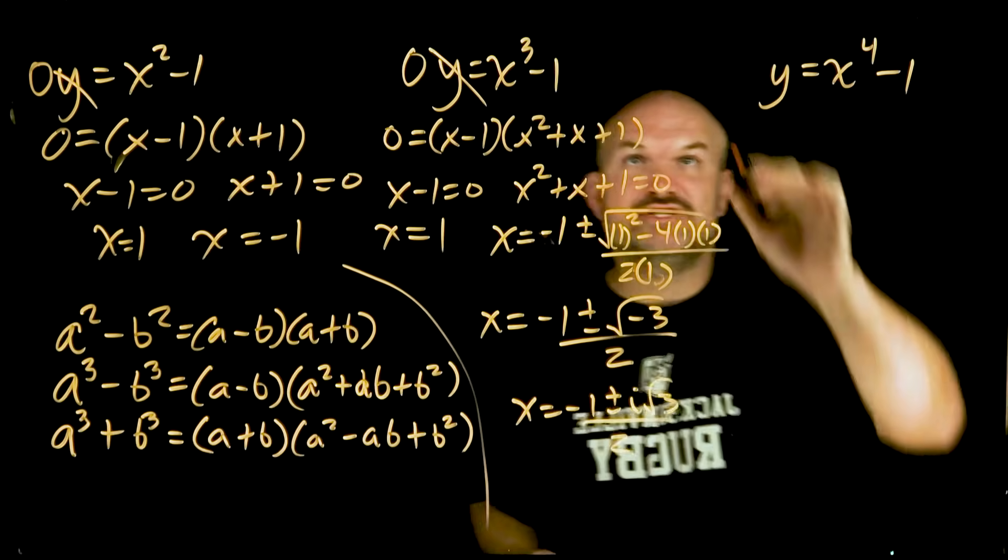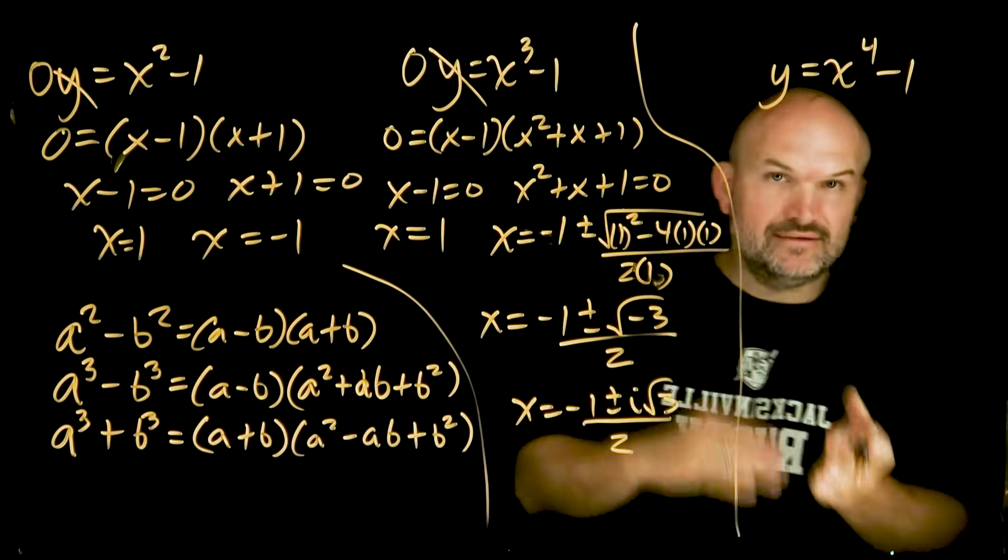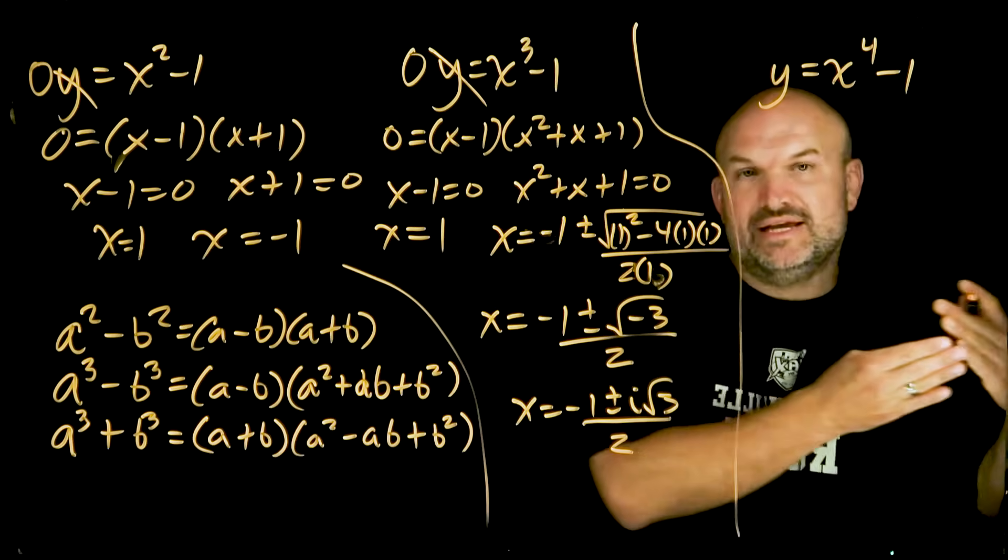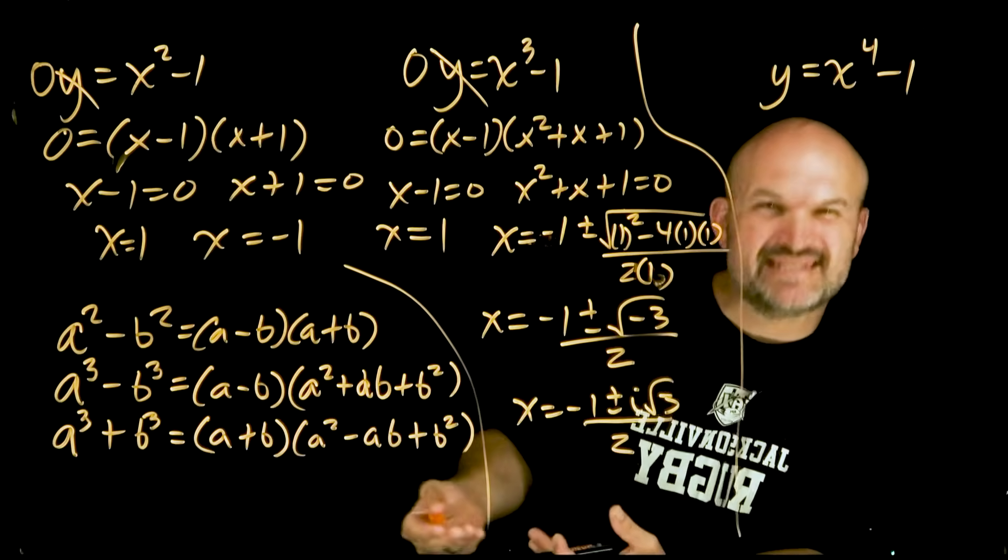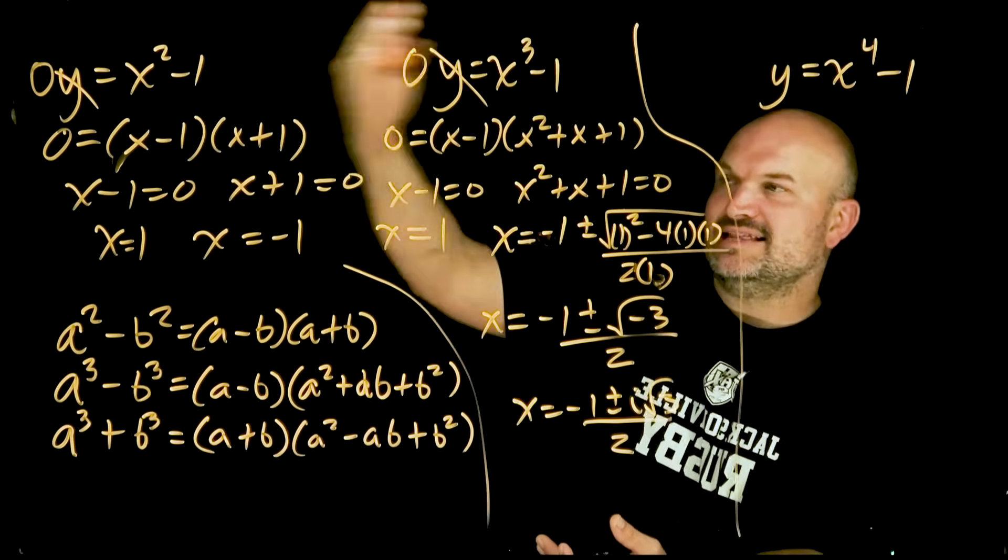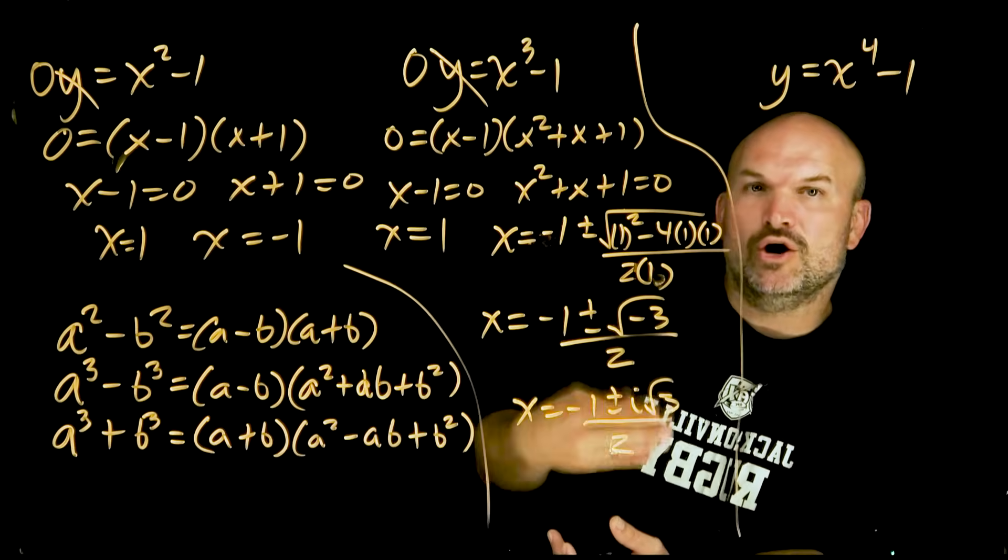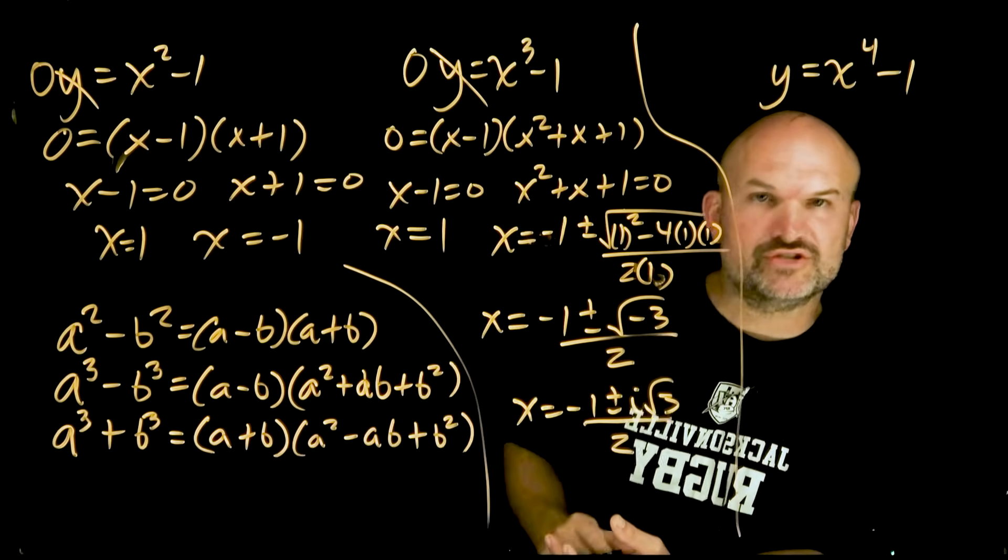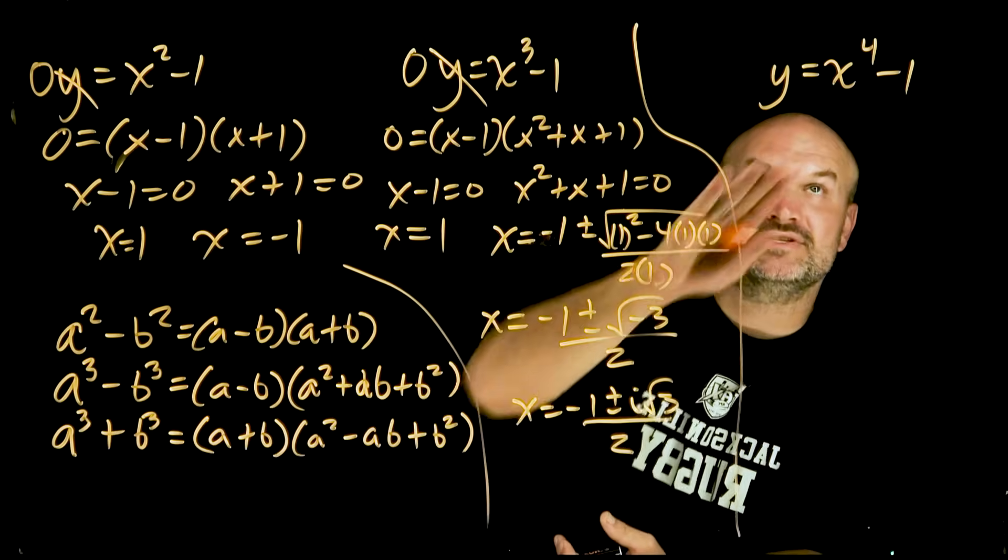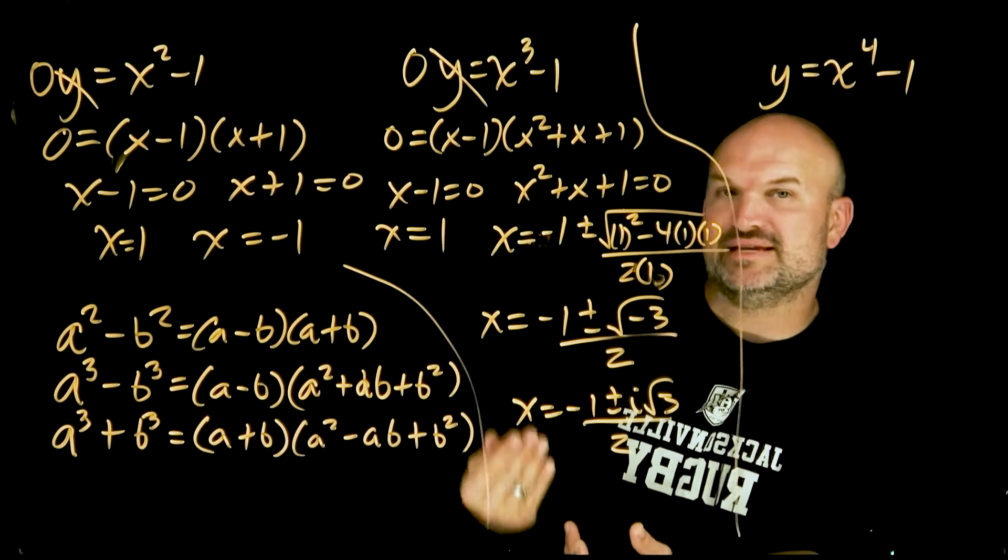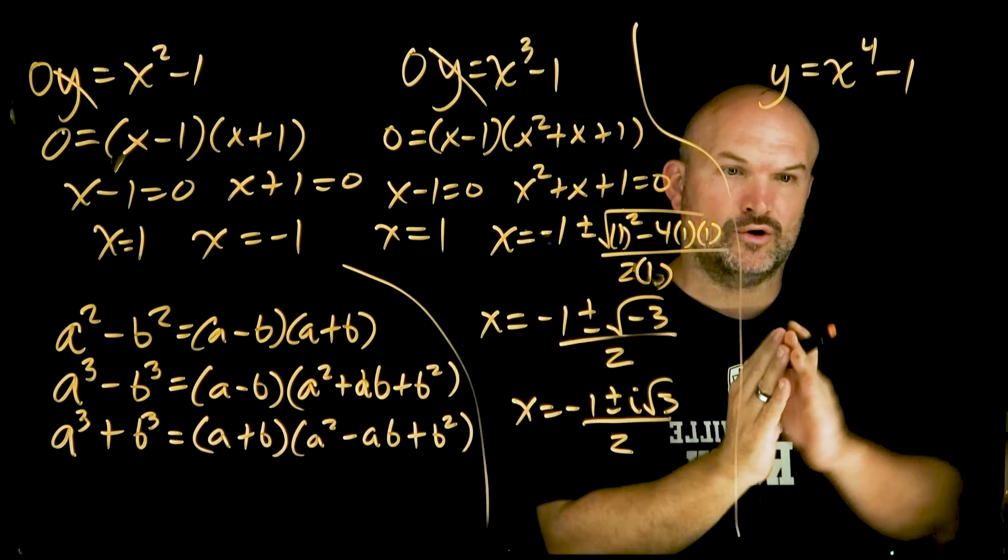So when we look at something to the fourth power, we already know that it's going to have four solutions. Could be all real, or it could be all imaginary, but it's going to have four solutions. So when I'm looking to approach this, one of the big mistakes students will make is they think that they can maybe do difference at two squares, which is the correct way to go about it, but they don't go all the way down to finding all four solutions. So here's the big tip. Because this is an even power, whenever you have something to an even power, to the fourth, to the sixth, to the eighth, always try to look to see if you can use the difference of two squares as a base model.